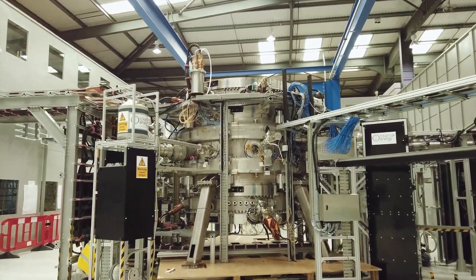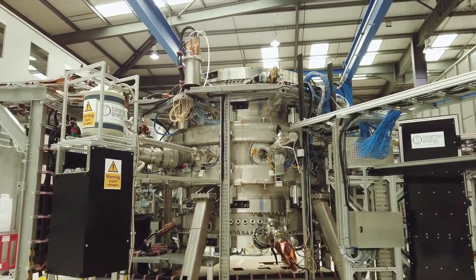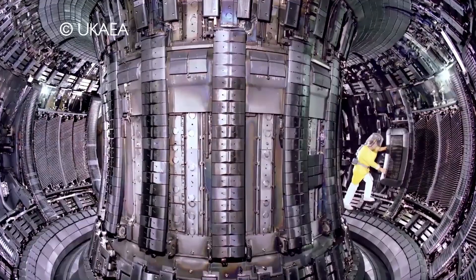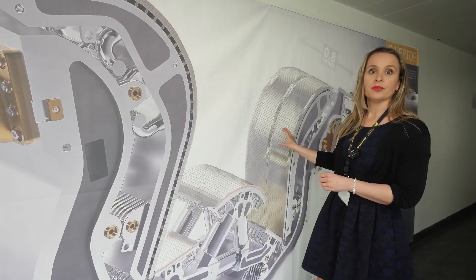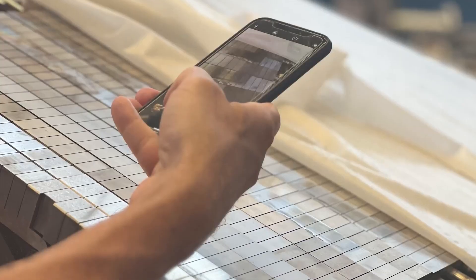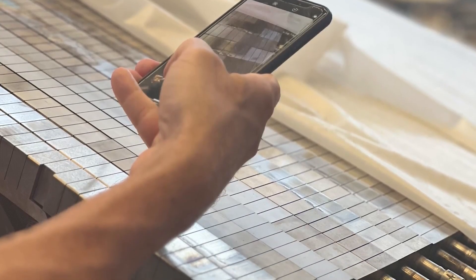So, why does this matter? Fusion energy is clean, no long-lived radioactive waste like fission. But it's not without challenges. Fast neutrons can activate the reactor's metal parts. So, materials like tungsten are key to keeping everything safe and durable.